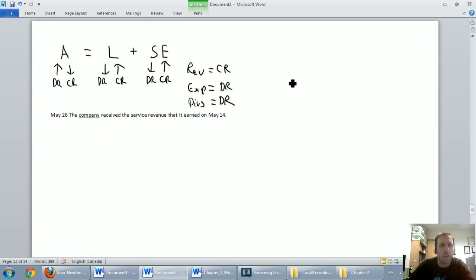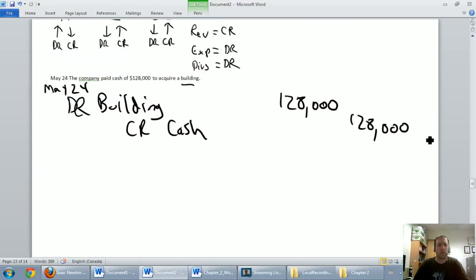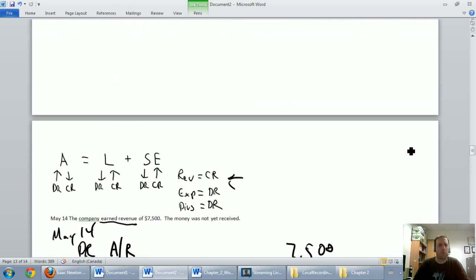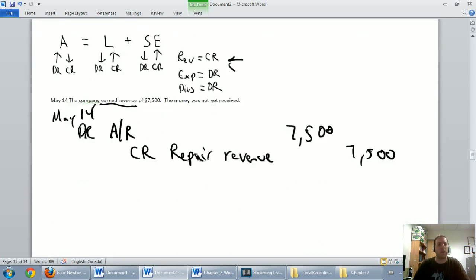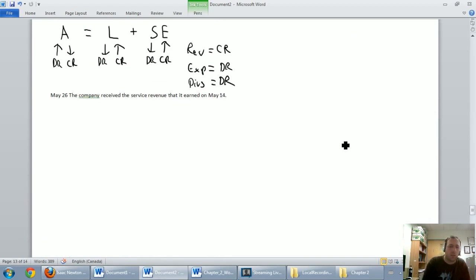Let's move on to the next one. May 26th. The company received the service revenue that it earned on May 14th. There's another one that's referencing something. Let's go up to May 14th. Oh, right. We did revenue of $7,500, but we didn't get the money. So now it's saying we got the money. How much money did we get? We got $7,500. Our cash is going up by the $7,500 we received. So let's debit cash for $7,500.